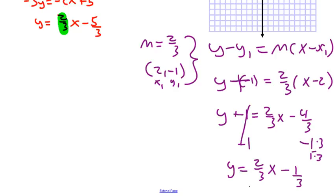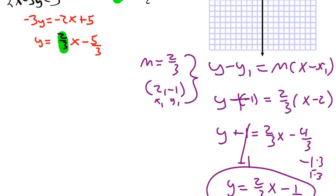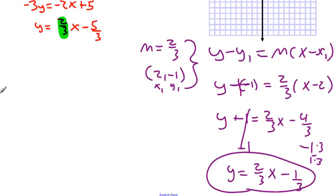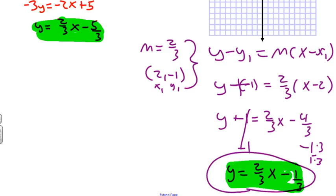So we get our equation. Let's look at these two equations: y = (2/3)x - 5/3 and y = (2/3)x - 7/3. Does it make sense that both of these lines are parallel? The reason it should make sense is because you look at just one thing — the slope m. If two equations have the same slope, we say they are parallel.